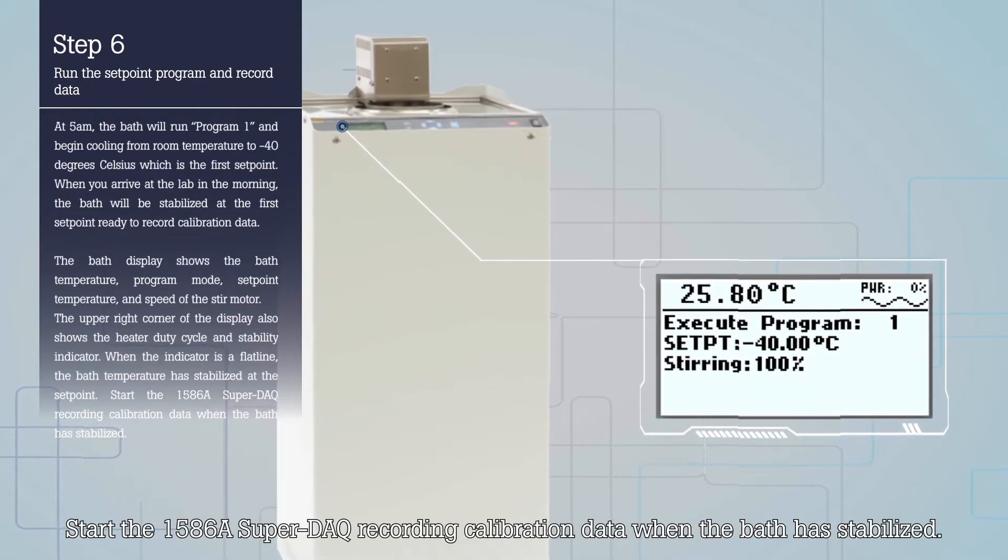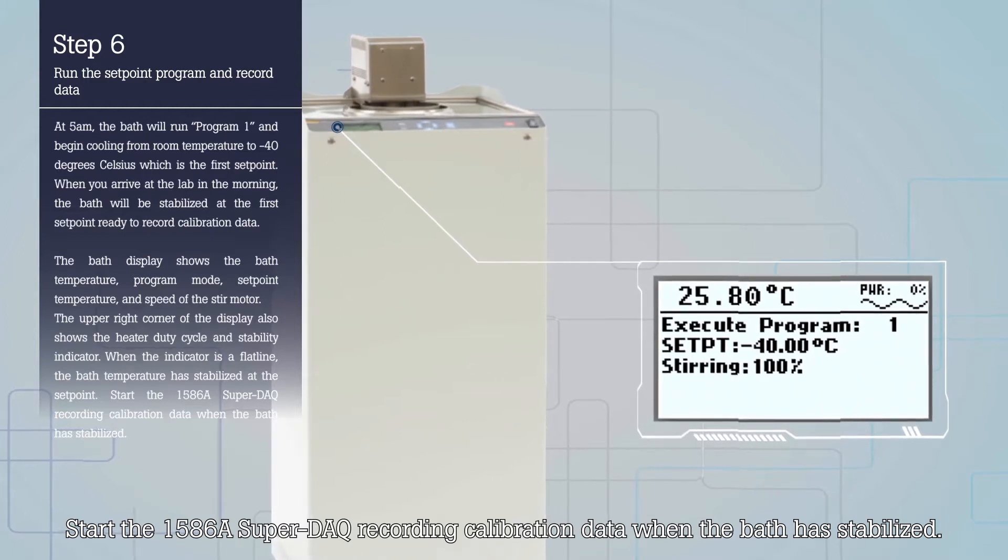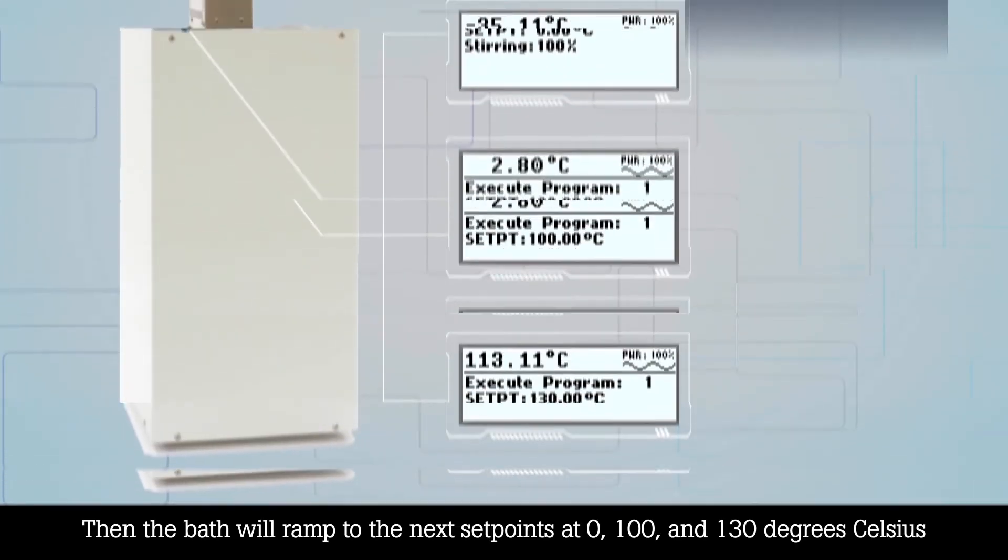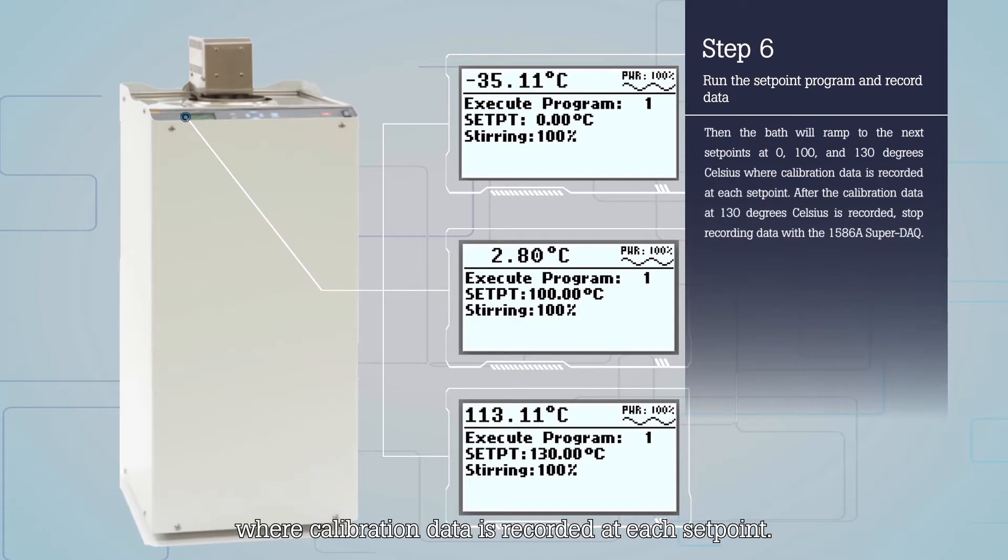Start the 1586 Super-DAC recording calibration data when the bath has stabilized. Then the bath will ramp to the next set points at 0, 100, and 130 degrees Celsius where calibration data is recorded at each set point. After the calibration data at 130 degrees Celsius is recorded, stop recording data with the 1586 Super-DAC.